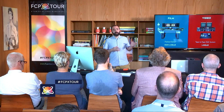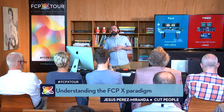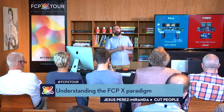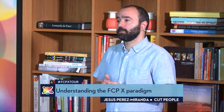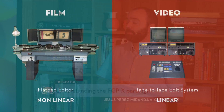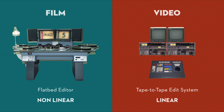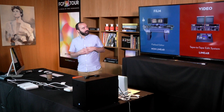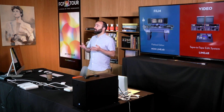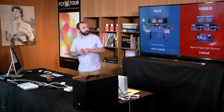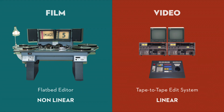Right before the Avid was introduced in 1989, there were two main systems. We had the flatbed editor — film editors used to cut on that, it was a non-linear system — and then the video editors worked on broadcast television, used to the tape-to-tape edit system, which was an electronic device and it was linear. It wasn't so flexible in terms of timing and pacing.